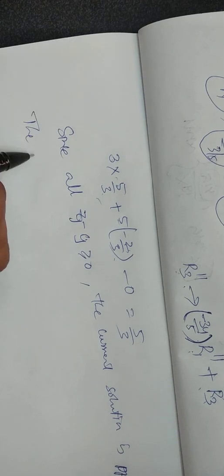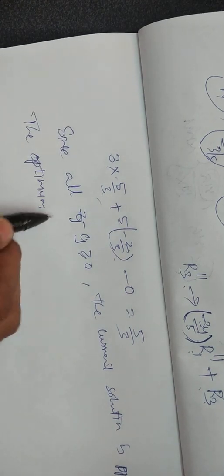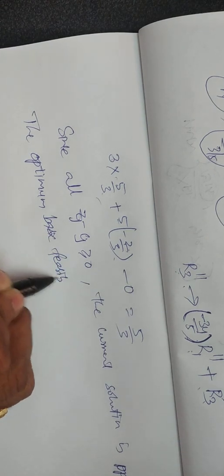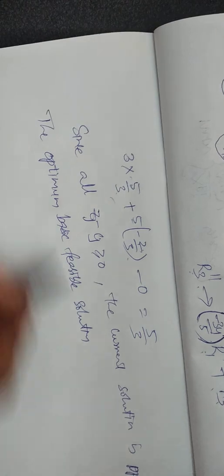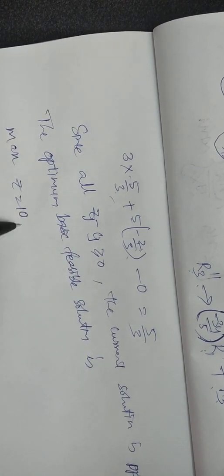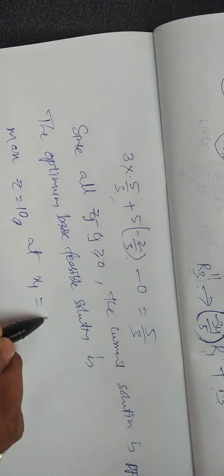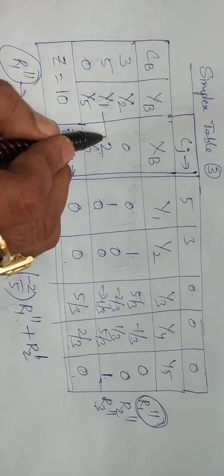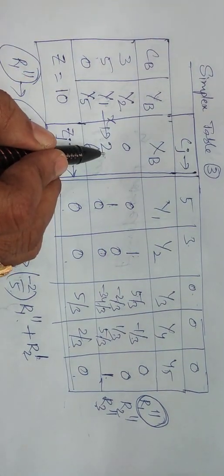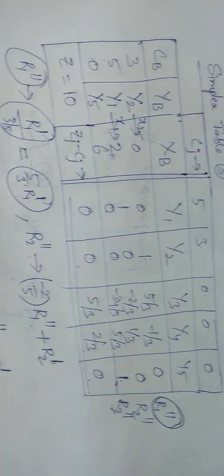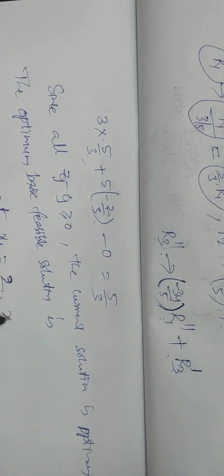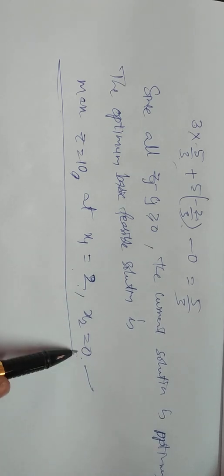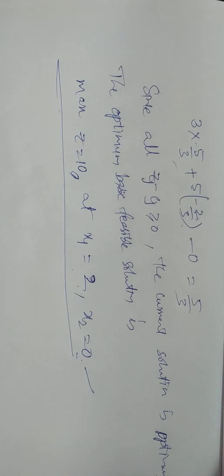Since all ZJ − CJ are greater than or equal to 0, the current solution is the optimum solution. The optimum basic feasible solution is: maximize Z = 10, at X1 = 2 and X2 = 0. This is the method for resolving degeneracy in a linear programming problem. Hope you understand. Thank you.